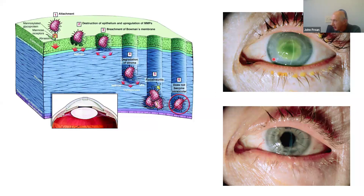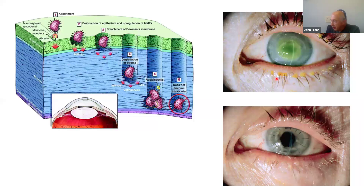This is a patient with Acanthamoeba keratitis — you can see the central lesion in the cornea, the ragged edges stained with fluorescein in yellow, and the ring-shaped infiltrate as the amoeba spread in the stroma. This can be difficult to treat if not recognized early enough. Unfortunately many patients are put on steroids as soon as they develop a painful eye, which accelerates the disease.